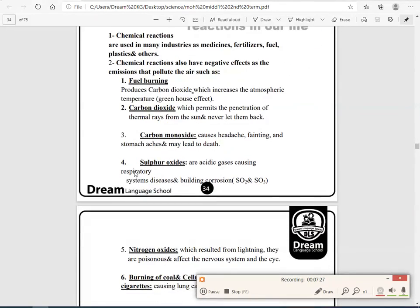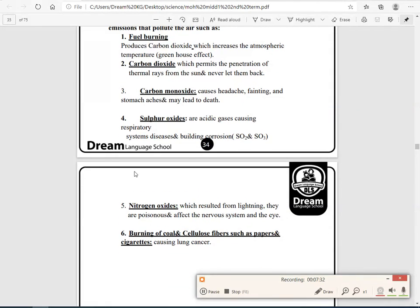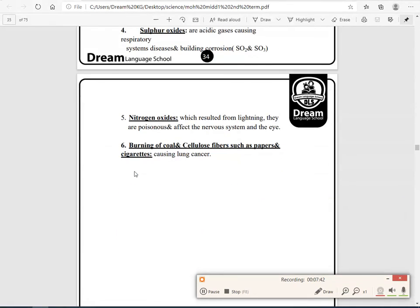Sulfur oxides, which are acidic gases that cause respiratory system breathing problems and building corrosion for the SO2, sulfur dioxide, and sulfur trioxide, and nitrogen oxide, which is produced during lightning. You have to know that if we burn coal and cellulose fibers such as papers and cigarettes, this will cause lung cancer.